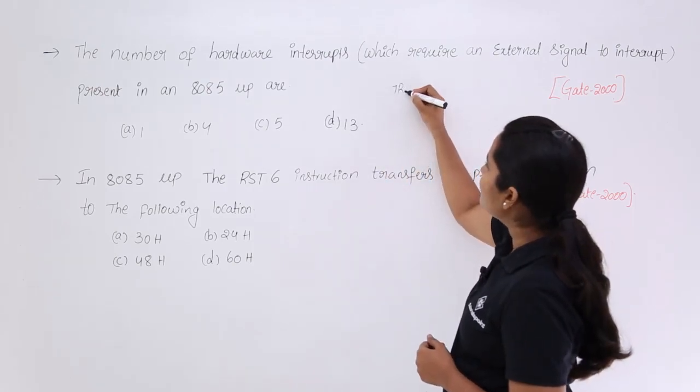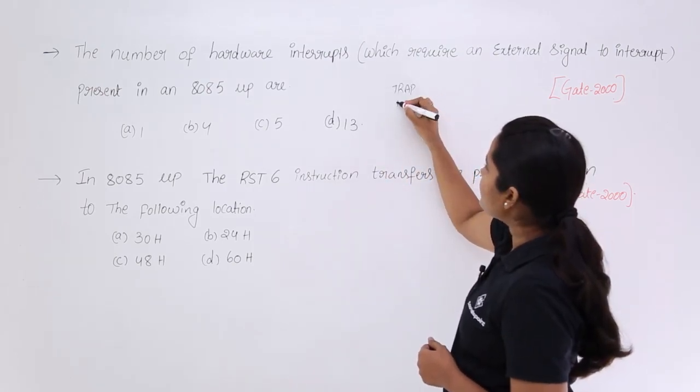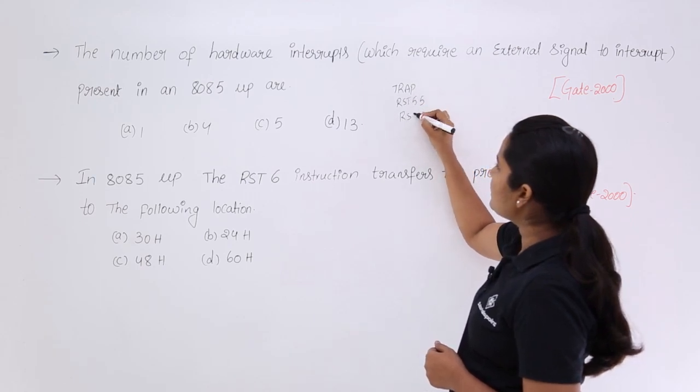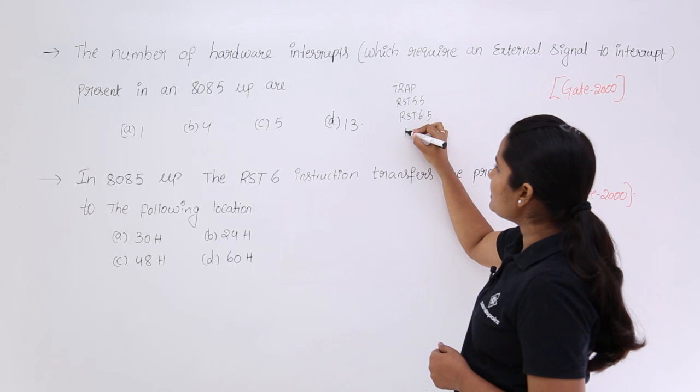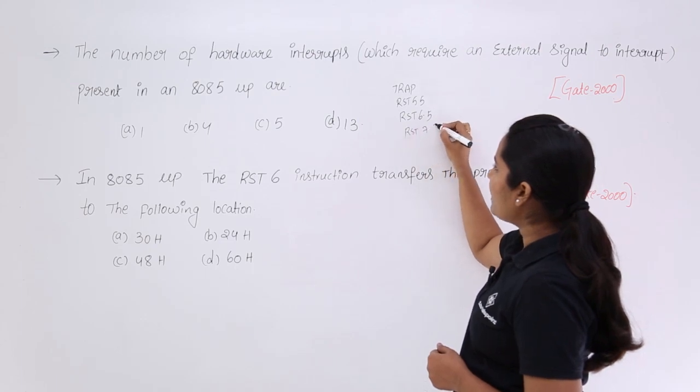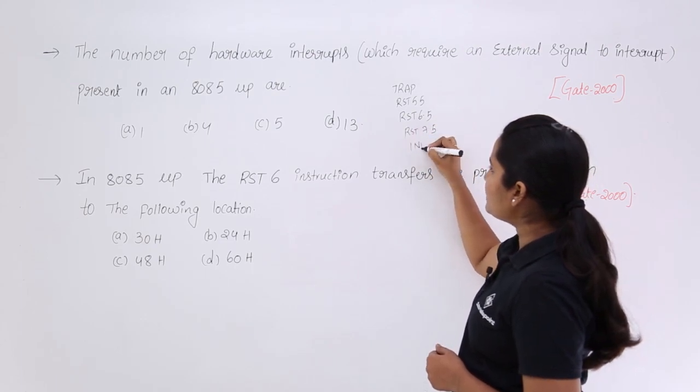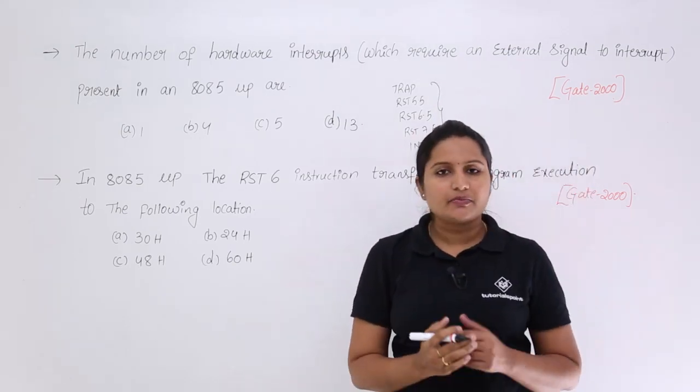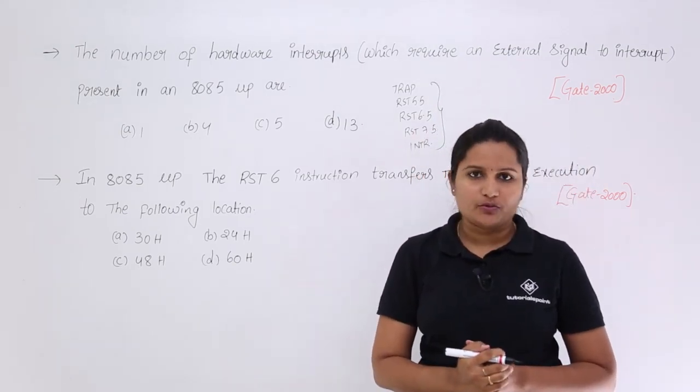That is TRAP and RST 5.5, RST 6.5 and RST 7.5 and finally, INTR interrupt. These 5 are the hardware interrupts present in 8085 microprocessor.